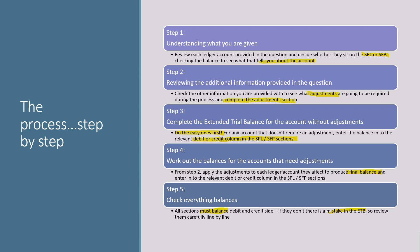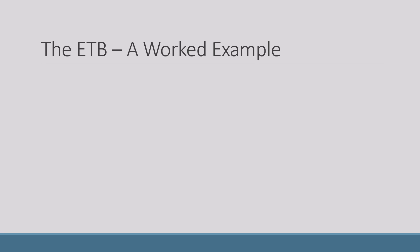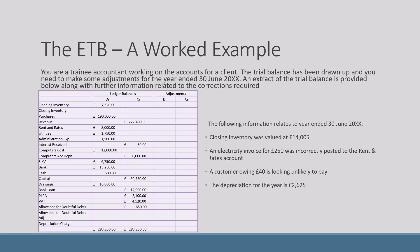Now we'll go through a fully worked example. You're a trainee accountant working on accounts for a client. The trial balance has been drawn up and you need to make some adjustments for the year ending 30th June. An extract of the trial balance is provided along with further information about corrections required. The adjustments I've put down are just examples — you can have all different types of adjustments including accruals, prepayments, and bank adjustments. Make sure you use your knowledge and understanding of the information.